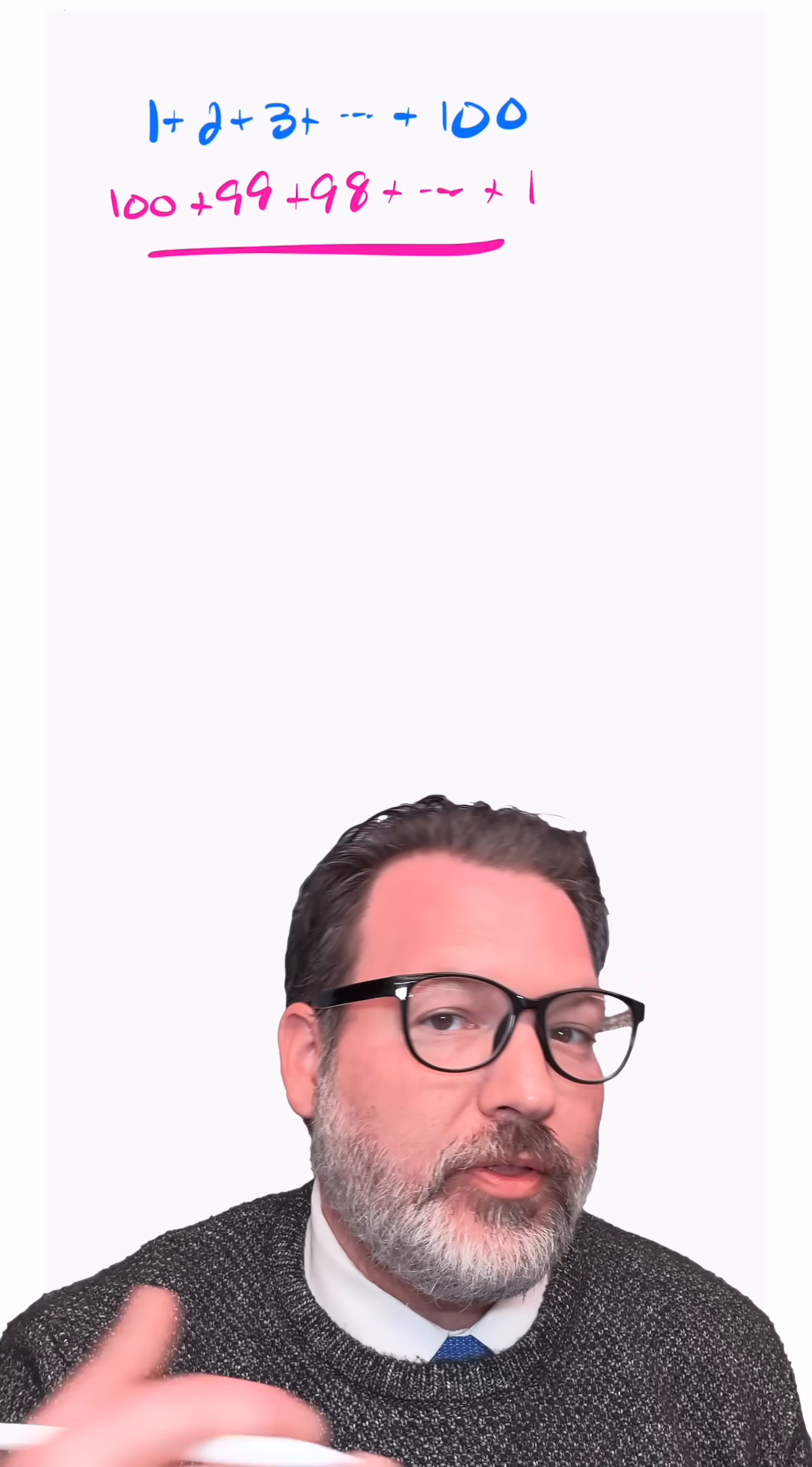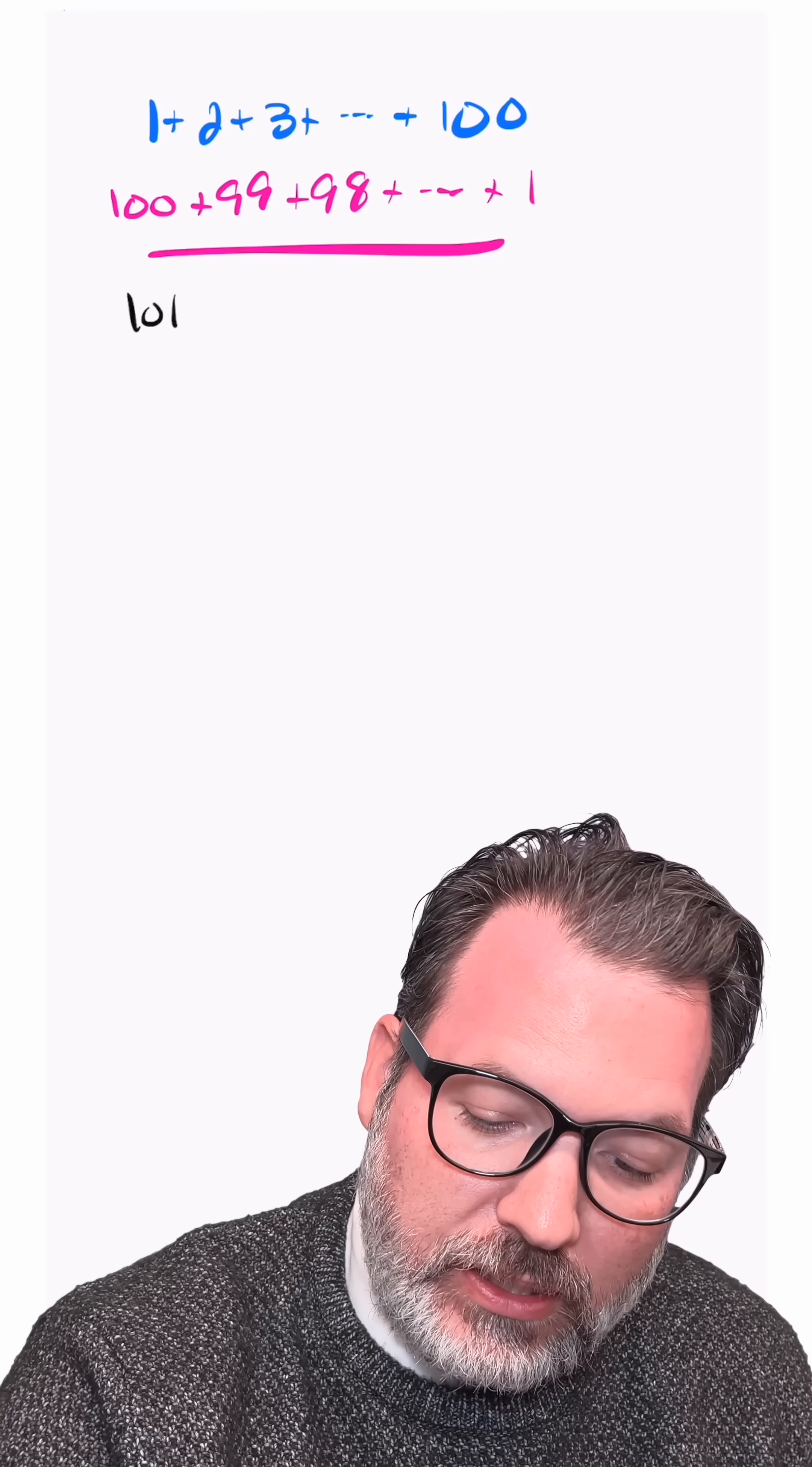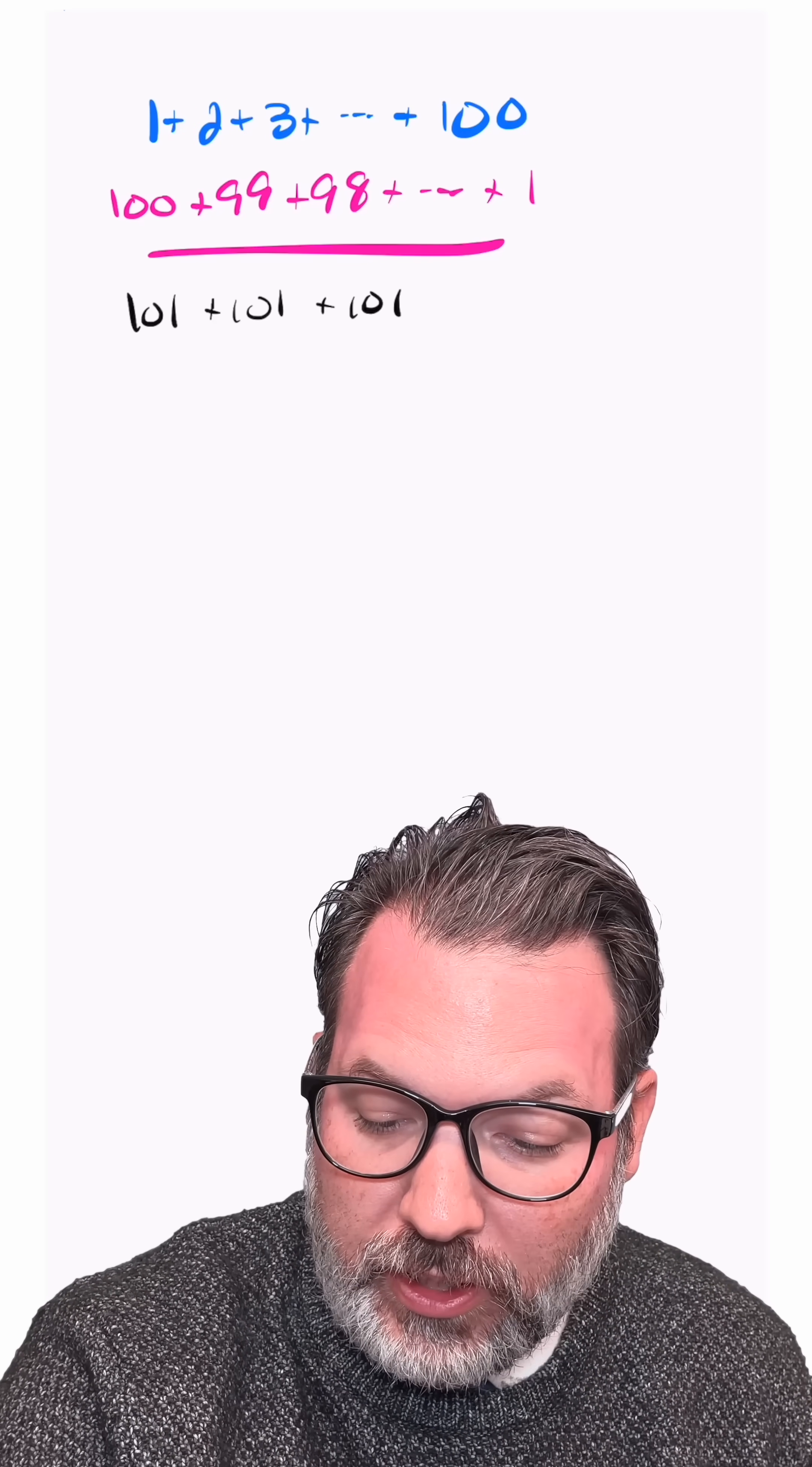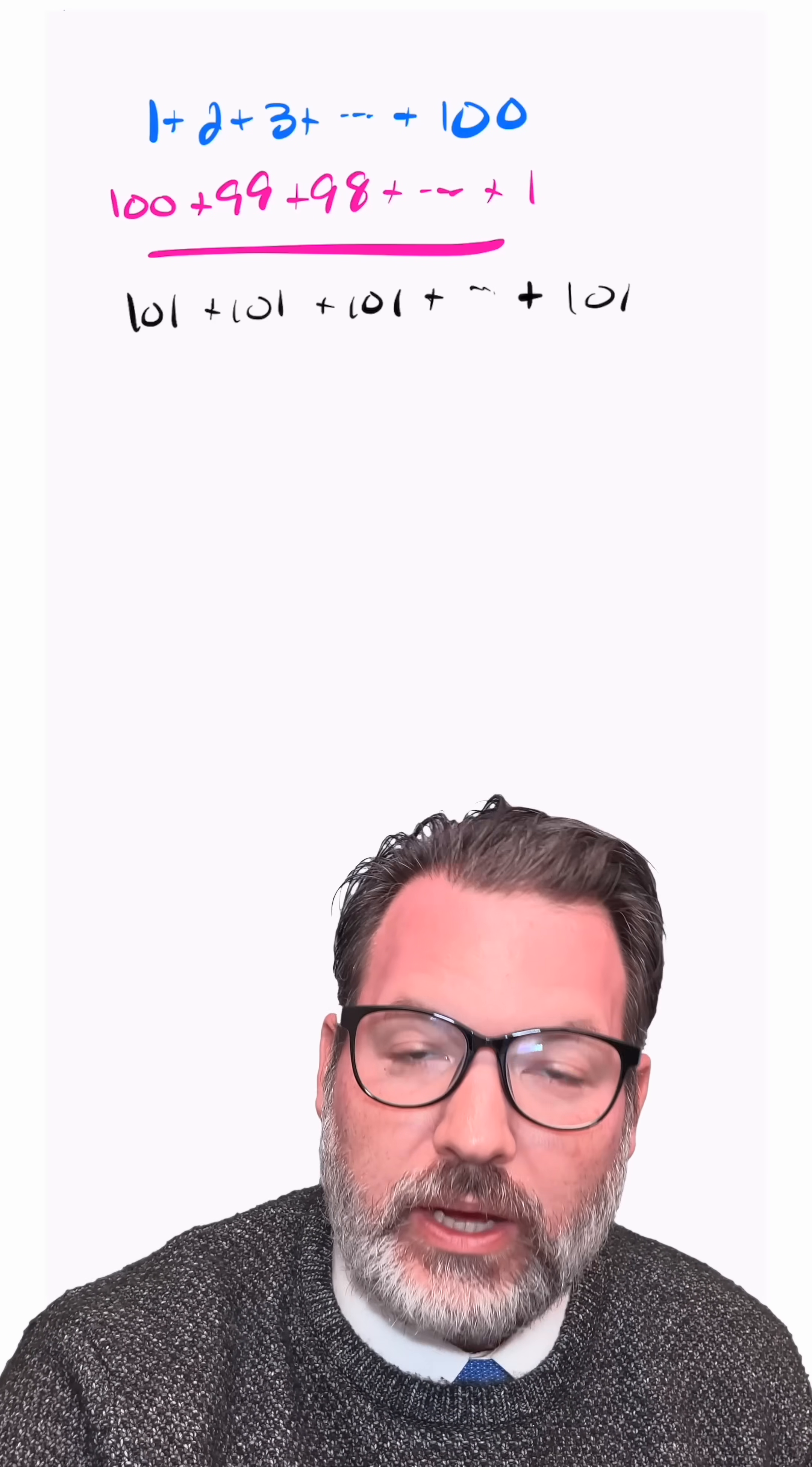1 plus 100 makes 101. 2 plus 99 makes 101. 3 plus 98 makes 101. All the way down the list until you get to those last two numbers, 100 plus 1, which of course also make 101.